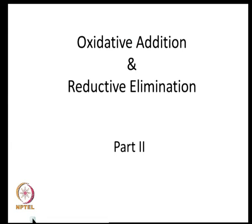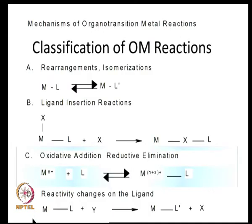This is the second part of the description of oxidative addition and reductive elimination, continuing from the previous lecture. The important thing to remember is that in oxidative addition, we have a change in the oxidation state of the metal. Invariably, there is also the formation of a new metal-ligand bond, resulting in an expansion of the coordination sphere of the metal.